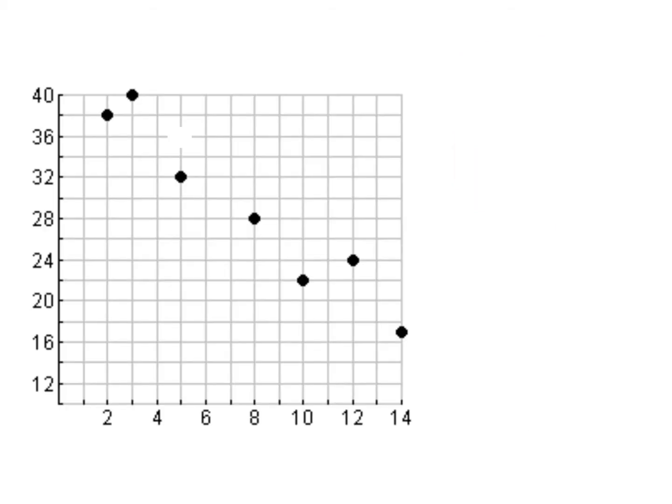On this slide here I have some data. I have ordered pairs on my scatter plot, and I want to know what is the correlation. My options are positive, negative, or no, and strong or weak. So I need to describe it using both sets of terms. Well, if I were to think about a line of best fit, that line would have a negative slope. So my correlation is negative, and those dots are close to where that line of best fit would be. So my description here would be negative and strong.